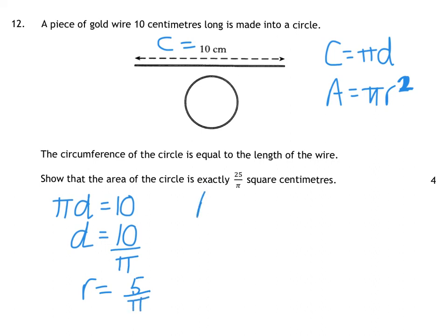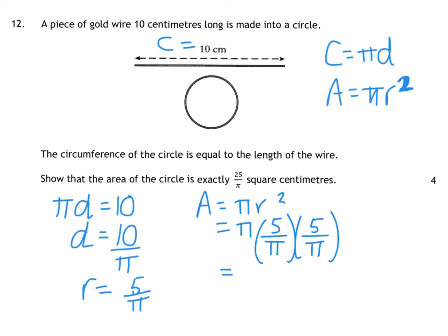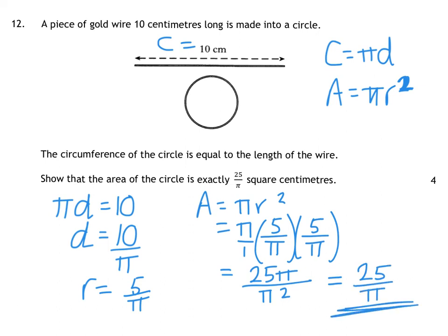Area equals pi r squared. So we have pi times 5 over pi, and instead of squaring I'm just going to write it twice. On the top you've got 5 times 5 times pi, so 25 pi. On the bottom you've got pi squared. You can cancel the pi and the pi squared, leaving you with 25 over pi, which is what they wanted you to get.